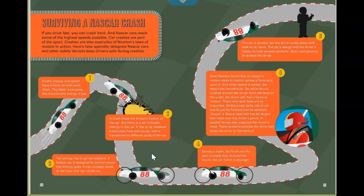A NASCAR seatbelt has six straps that meet near the driver's pelvis. And a special device also supports the driver's head. These systems provide the force that stops the driver's momentum. The car is usually totaled, but the driver walks away with little to no harm. That's the car design and the driver's safety devices working perfectly. Both used physics to protect the driver.